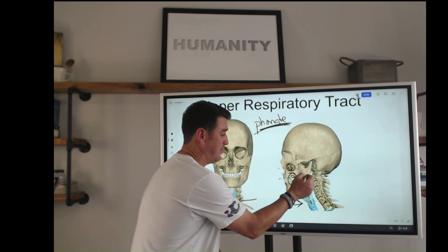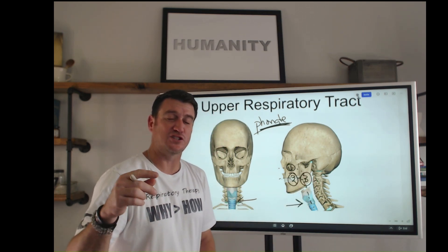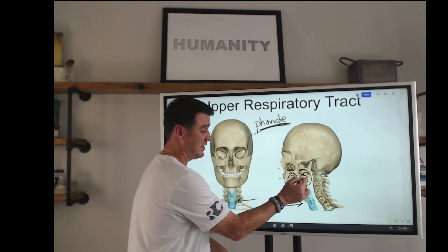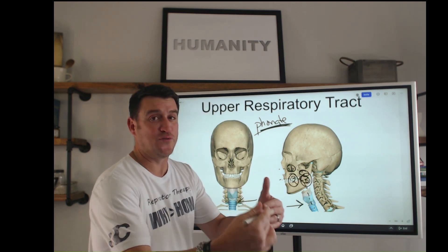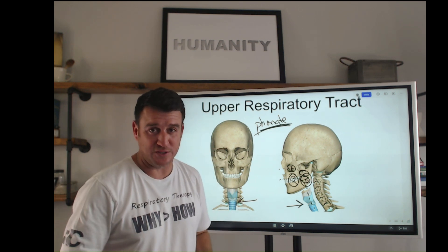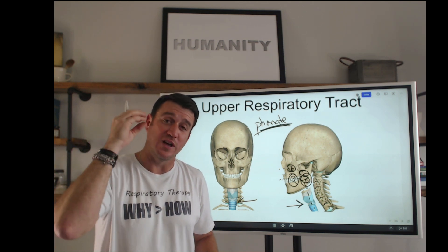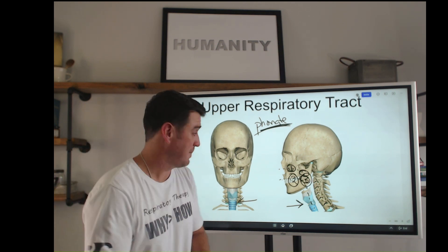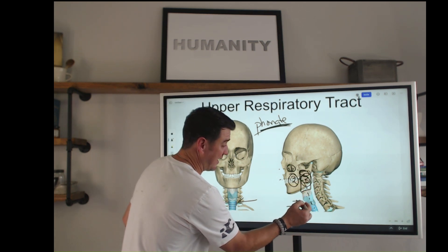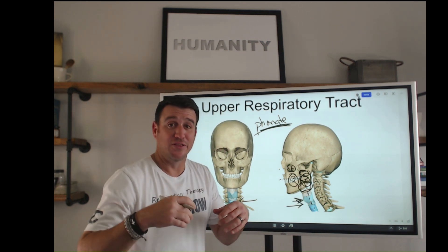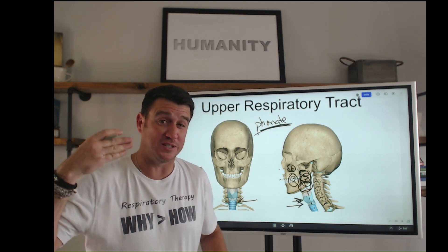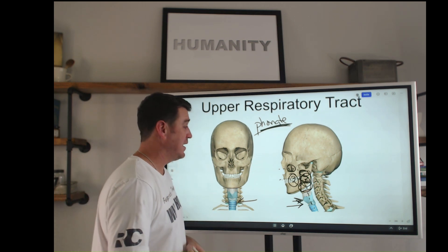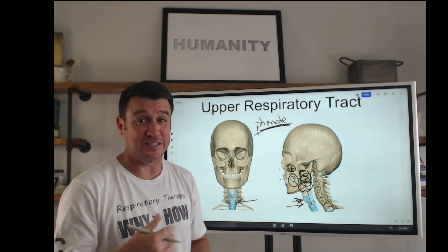The next portion is the pharynx. The pharynx turns into three smaller portions: the posterior portion of the nasal cavity is the nasopharynx, the posterior segment of the oral cavity is the oropharynx, and where the pharynx connects down to the larynx is the laryngopharynx. The pharynx is the posterior segment — towards the back where your gag reflex is located — and is important in protecting the lower airway from aspiration.